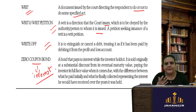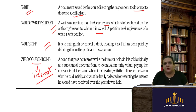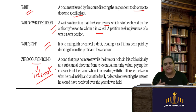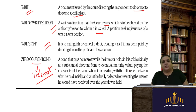Zero coupon bond — coupon means interest rate — so in a zero coupon bond, no interest is paid to the investor. Then why invest? These bonds are issued at a discount and when sold you get the original price — the difference between the discounted issue price and the face value is your earnings from this type of bond.